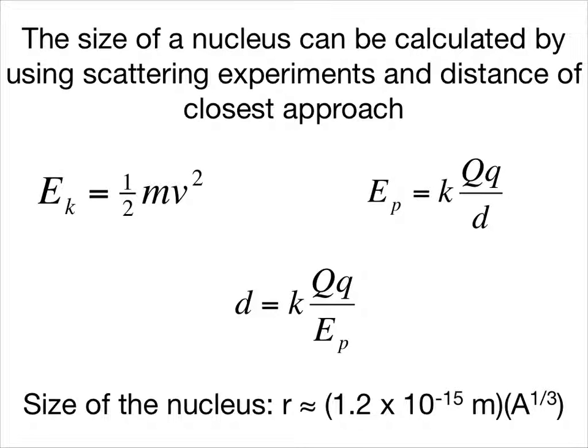So once again, if we know the kinetic energy of the alpha particle, by the time it comes to a stop all of that kinetic energy has been converted to electrical potential energy. By rearranging the electrical potential energy equation, we can solve for the distance. This is called the distance of closest approach.